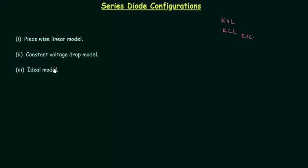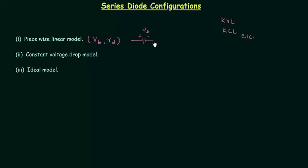I have explained three equivalent models. The first one is the piecewise linear model, the second one is the constant voltage drop model, and the third one is the ideal model. In the piecewise linear model we have Vb, the barrier potential of the diode, and Rd, the resistance of the diode. The equivalent model has Vb in series with Rd.